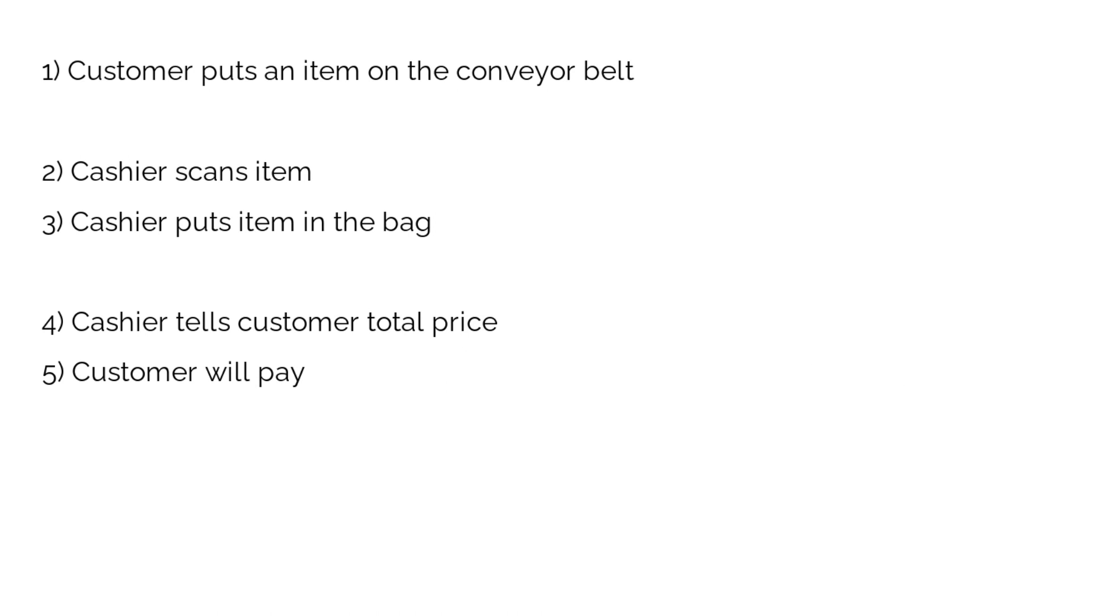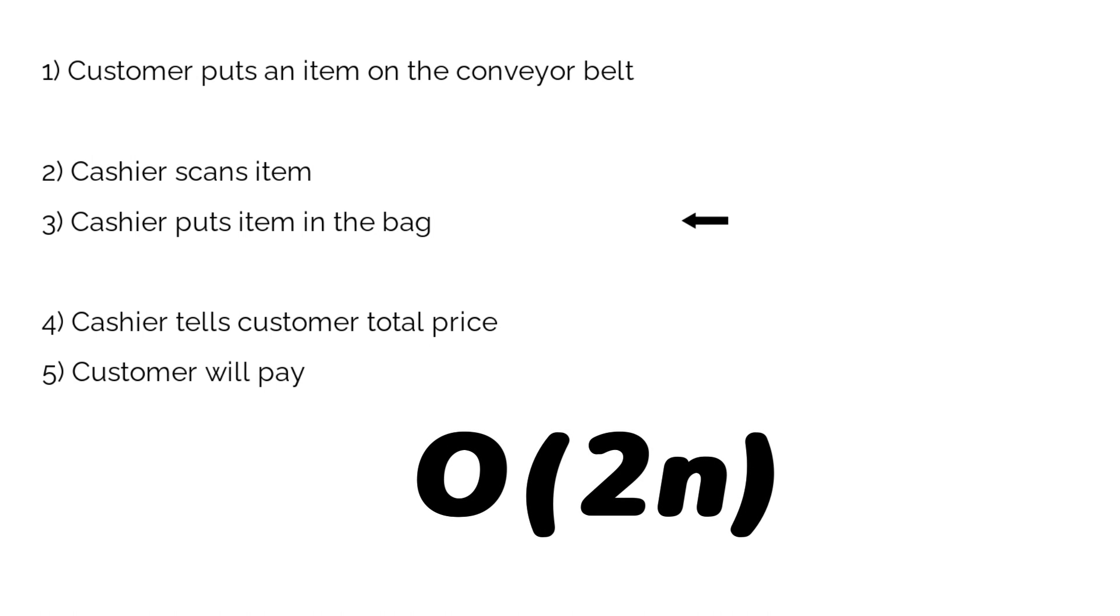Okay, let's take our previous algorithm and find out how it will scale. So the first step is that the customer will put the items on the conveyor belt. So now we have to look at how many items we have and we have N items, so it will repeat N times. So we now have N and then the cashier will scan the items and now we have two times N. Then she puts N items in the bag which gives us three times N and then the cashier will tell the customer the total price which doesn't depend on the input. So we have three times N plus one and then the customer will pay which also doesn't depend on the input. So we get three times N plus two.